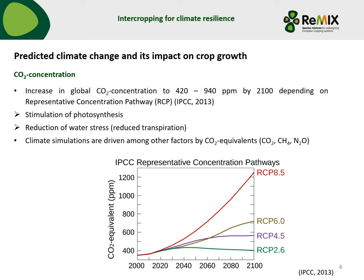In general, the higher CO2 concentration will stimulate photosynthesis and also reduce water stress by reduced transpiration. The climate simulation models are driven among other factors by CO2 equivalents. This does not only include the CO2 concentration but also the concentration of methane and nitrous oxides. In this graph you can see the CO2 equivalents between the year 2000 and 2100 for the different representative concentration pathways, which depend on how in the future we continue to emit those warming potential gases.